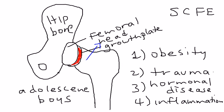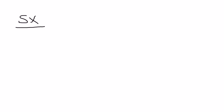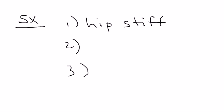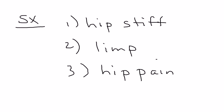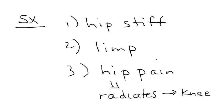The symptoms happen in a progression. The very first thing that can happen is the hip becomes very stiff — that's the initial presenting symptom. Next, the boy can start walking with a limp. Third is hip pain, and eventually this can progress to hip pain that radiates down to the knee, and it may even present as knee pain.